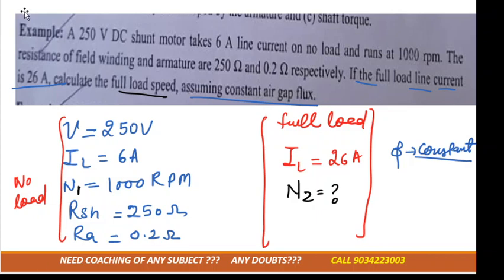In this question, they have given voltage, line current, speed, Rsh, and Ra. One is for no load and for full load the current is different. They are asking for the speed.